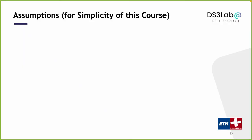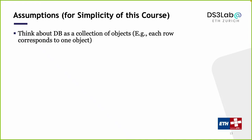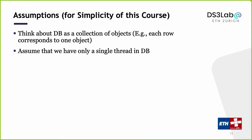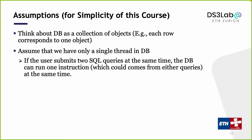For simplicity, we make a few assumptions. We will think of a database as a collection of objects — not tables and tuples in detail. Each row or cell corresponds to one object; the database is a hierarchical structure over a collection of objects. We also assume a single thread inside the database: even if a user submits two SQL queries at the same time, the database runs one instruction at a time, potentially interleaving instructions from both queries.